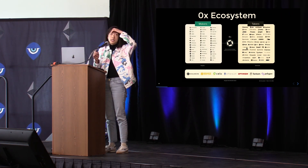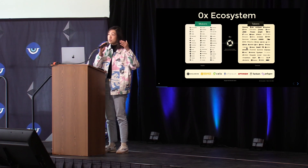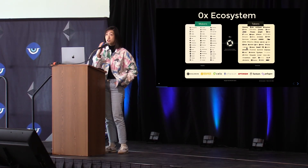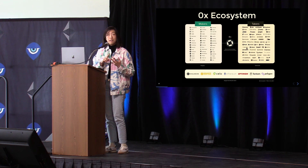Looking at the ZeroX ecosystem, we have two players: market makers on one side — these are makers supplying liquidity of assets into the market — and takers on the other side, who are picking up that liquidity. Makers include DEXs, AMMs, and professional market makers like Uniswap, Bancor, and Curve. Takers are applications such as wallets and exchanges like MetaMask, Matcha, and Coinbase Wallet. ZeroX sits at the intersection between these two players, providing a protocol, an API, and a set of developer tools to enable these interactions.